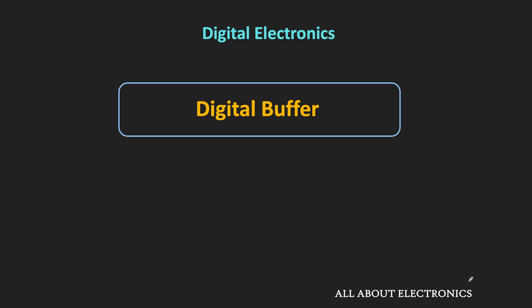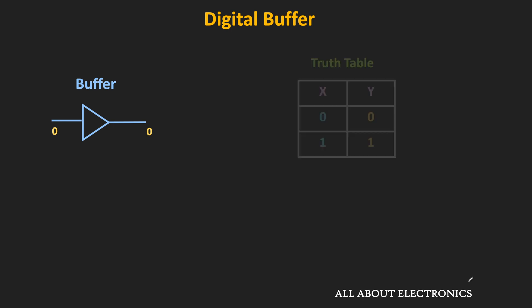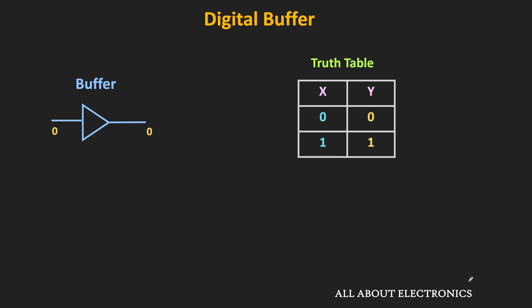This digital buffer is the logic gate whose output is same as the input. If the input is equal to 1, then its output is also equal to 1. And whenever its input is equal to 0, then its output is also equal to 0. This is the symbol of the buffer and this is the truth table.